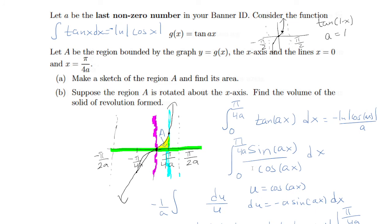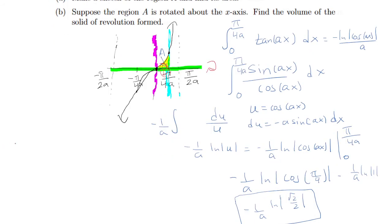Suppose region A is rotated about the x-axis — find the volume of the solid of revolution formed. So we're going to take this region and revolve it about the x-axis. This is going to be a disk method, going from 0 to π/4a. The formula is π·r², so I'll put the π here, and the radius is just the height, which is tan(ax), squared dx.